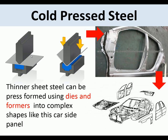Cold pressed steel: thinner sheet steel can be press-formed using dies and formers into complex shapes, like this car side panel. A soft part or mold is pushed in and that deforms the steel. More complex molds are used to shape the steel into the required form.